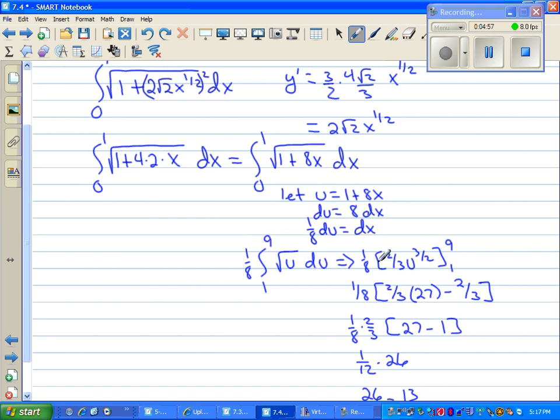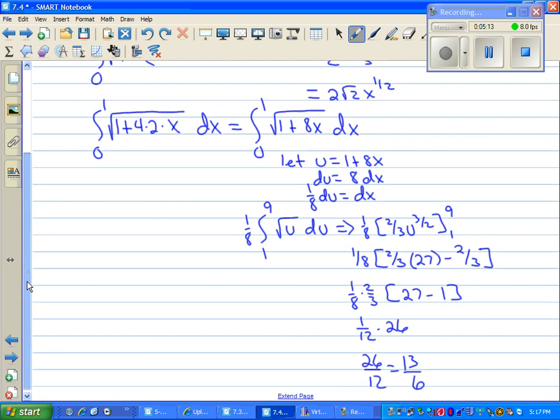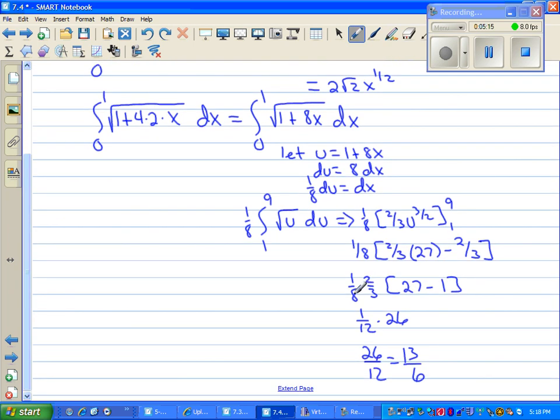Well the anti-derivative of the square root of u is 2 thirds u to the 3 halves. Now if you put 9 in there, the square root of 9 is 3. 3 squared is 27. If you plug a 1 in here, you just get 2 thirds. And in this step, I factored out the 2 thirds. I made 27 minus 1, 26. The 2 would cancel with the 8 leaving 4. So we have 1 twelfth times 26, which ends up being 13 sixths.